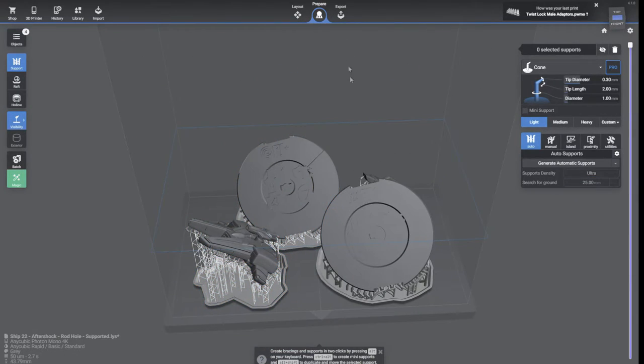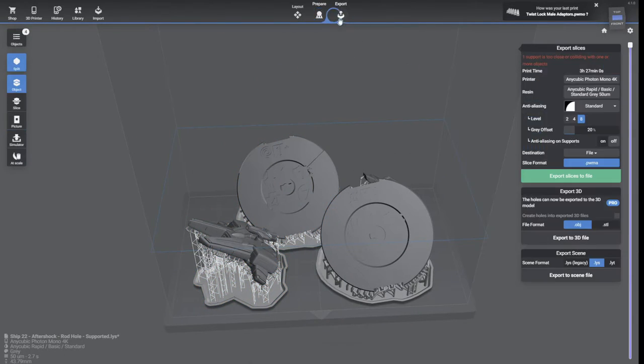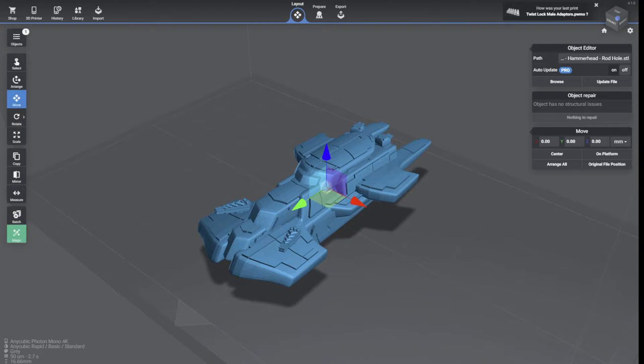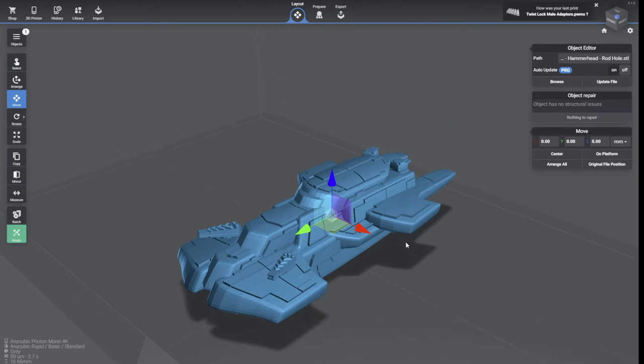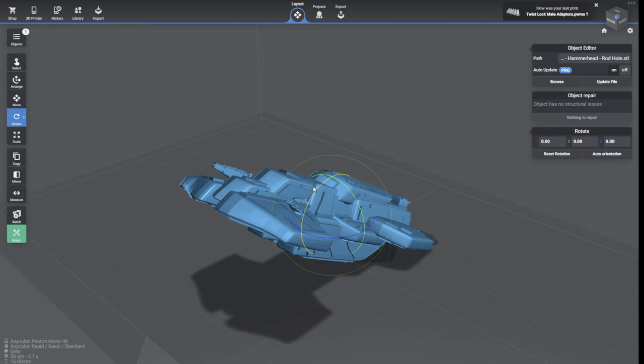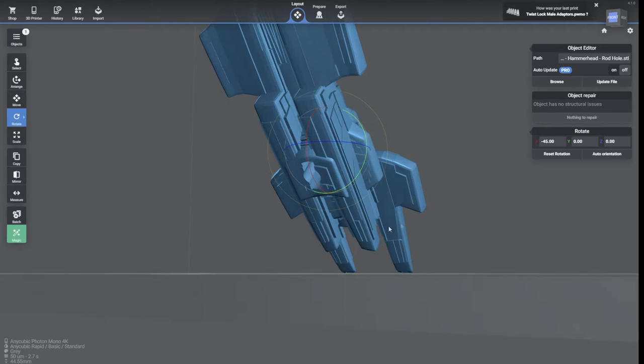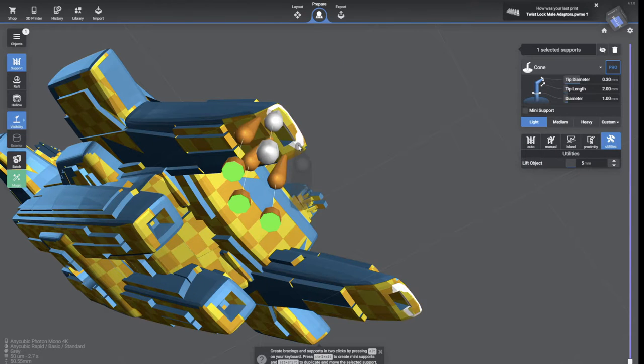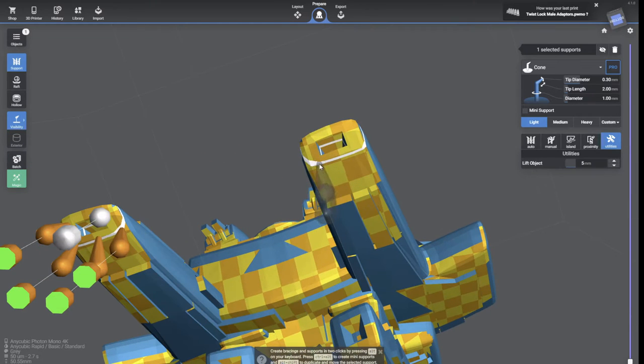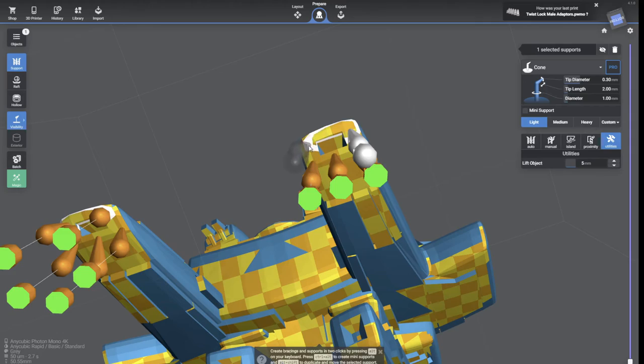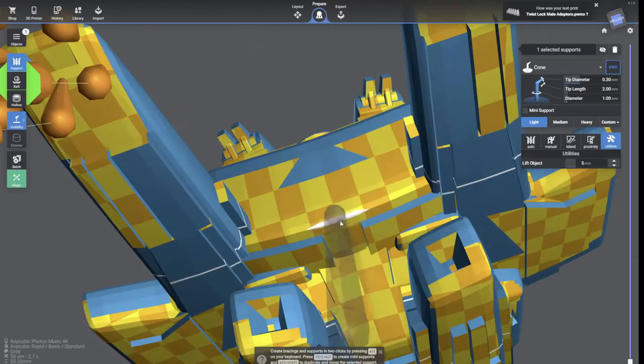Starting out, I recommend getting yourself some pre-supported models like these ones, but I have come up with a system for supporting and slicing that leads to prints that succeed on the first test print almost every time. The next video I'll do will be all about supporting and slicing your models. I'll go through all of that and how I get great prints every time. So if you want to be notified when that video arrives, hit the subscribe button and click the bell.